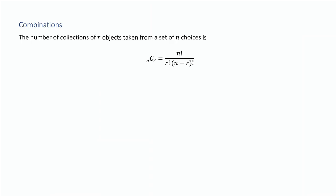The number of collections of R objects taken from a set of N choices is this thing here. This is what we call a combination. Note that this differs from permutations in that we don't care about the order. We just are taking a collection of R objects. The ordering of it does not matter.